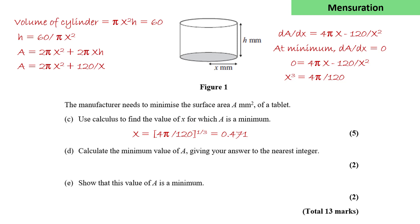So that's approximately 0.471. To calculate the minimum area of A, we simply substitute that into the expression for A, and we get the minimum area as being approximately 256 square millimeters.